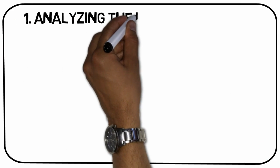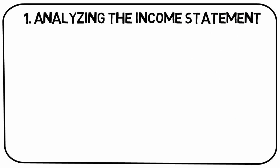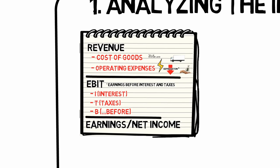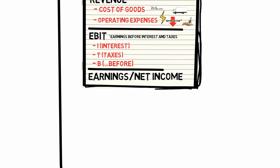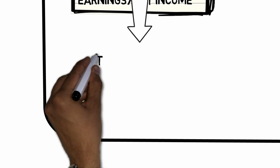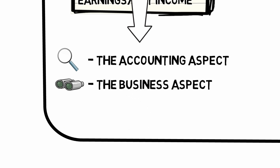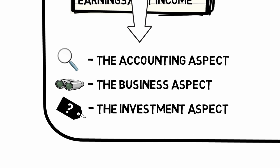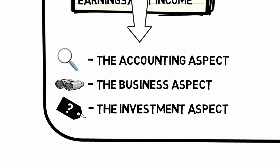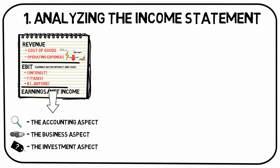Takeaway number one: Analyzing the income statement. Let's start out with the income account. This reveals the historical earnings of a company, which in turn is a good indicator of how much investors have received during the same period. The study of this statement goes under three separate headings: the accounting aspect — what are the true earnings of the past? The business aspect — what does this indicate for the future? And the investment aspect — based on this indication, what is a reasonable valuation of the security?